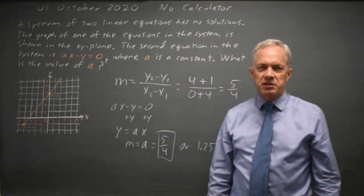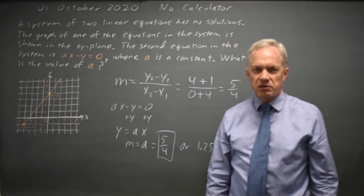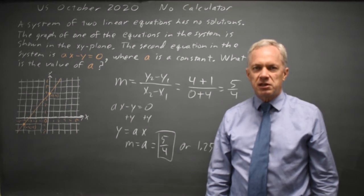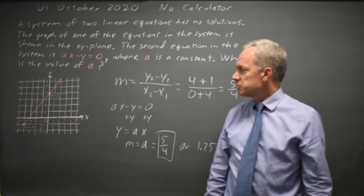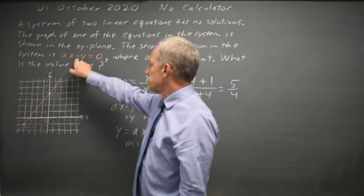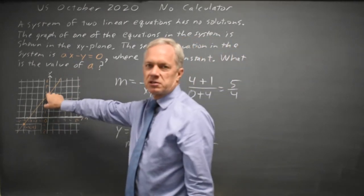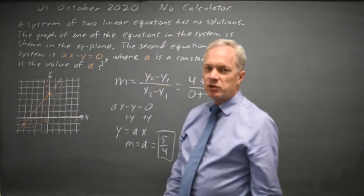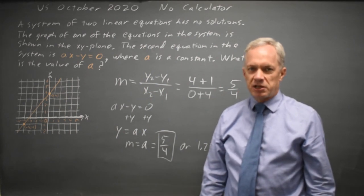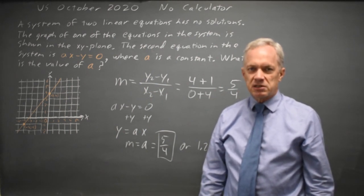College Board loves questions about no solution or infinitely many solutions and in both cases you have the same slope. For no solution you'll have different Y intercepts. This one has a Y intercept of 0 where the one shown has an intercept of 4. For infinitely many solutions you'll have the same Y intercept but in both cases the same slope.